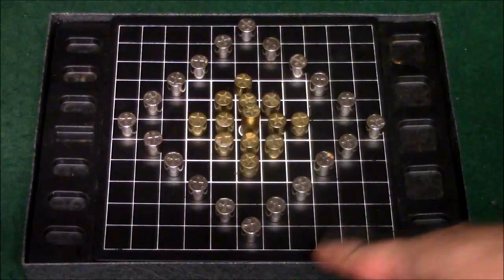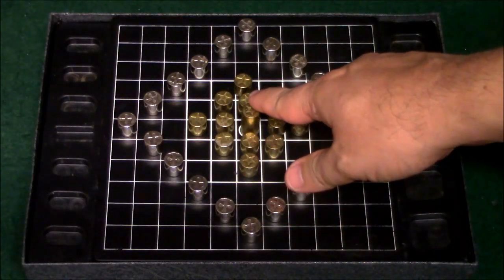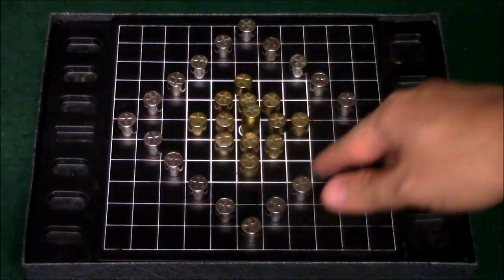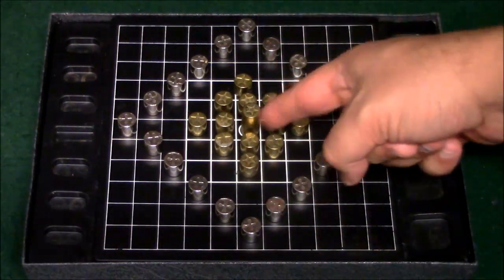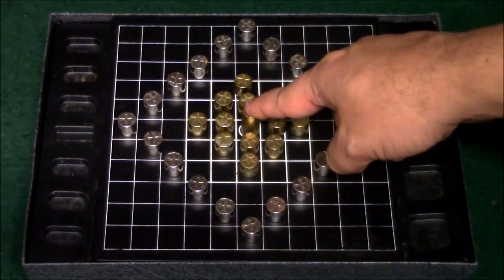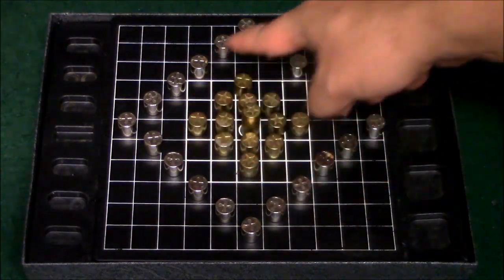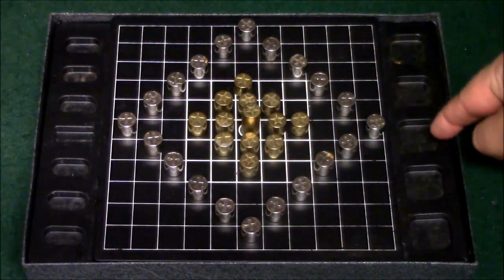Now the object of the silver team is they're going to be trying to keep this person blocked in this quadrant over here or try to capture him. The object of the gold team is they're trying to get the flagship out of this boundary over here, out here into this outer area.